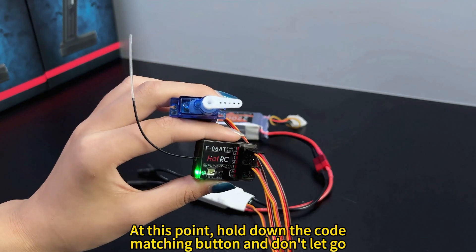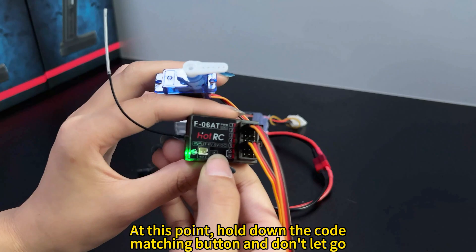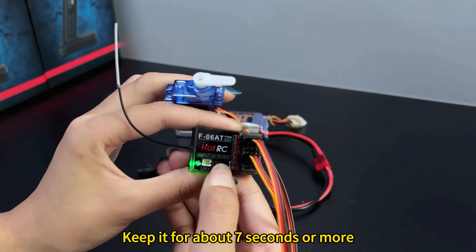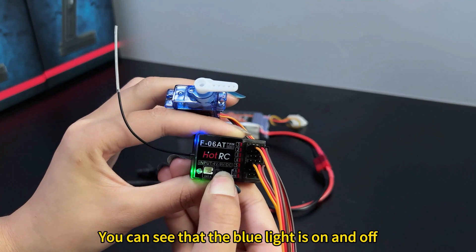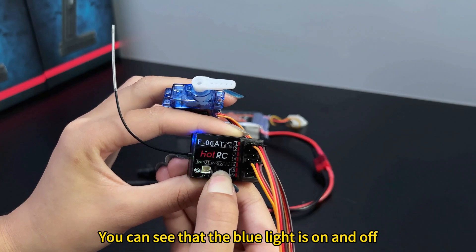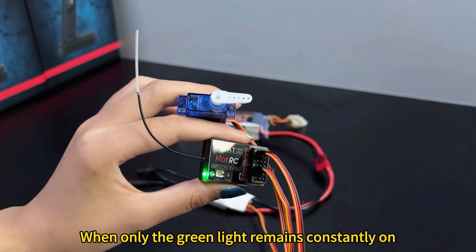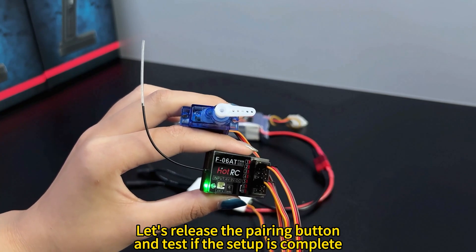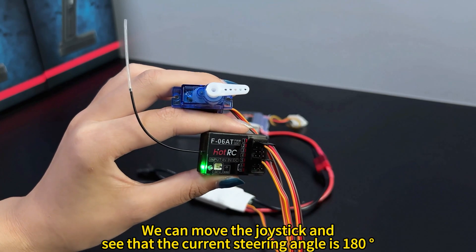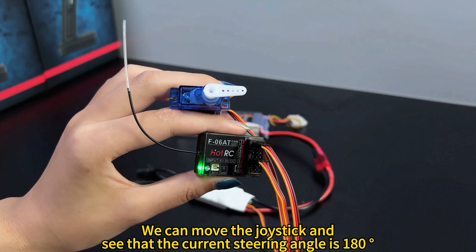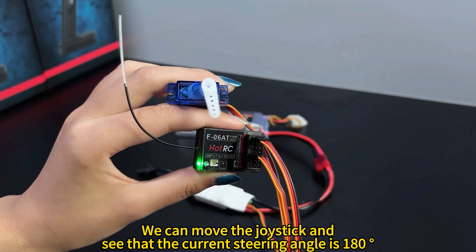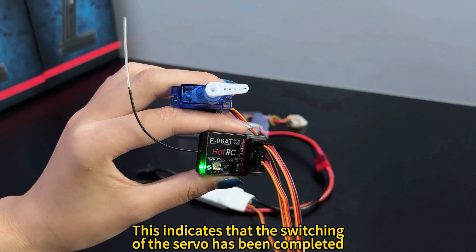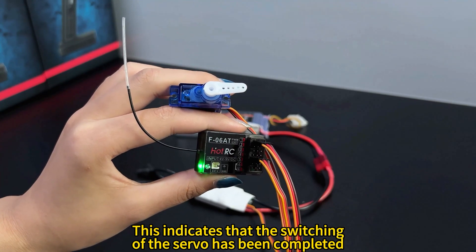At this point, hold down the code matching button and don't let go. Keep it for about 3 seconds or more. You can see that the blue light is on and off. When only the green light remains constantly on, let's release the pairing button and test if setup is complete. We can move the joystick and see that the current steering angle is 180 degrees. This indicates that the switching of the servo has been completed.